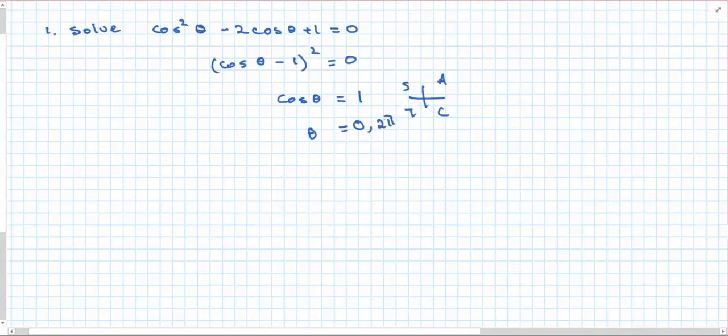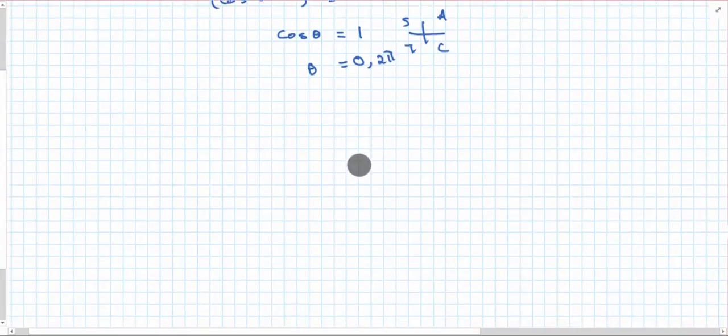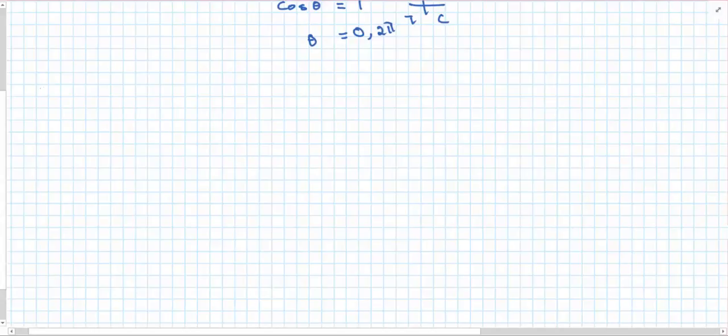So that was a nice easy straightforward solution. Let's look at something slightly more challenging. Let's say we want to solve sin squared x minus sin x cos x equals 0.